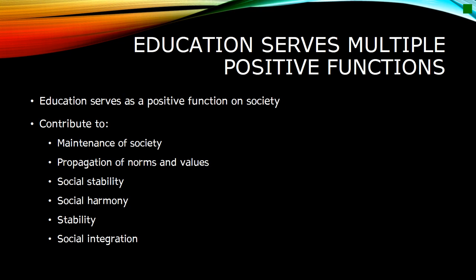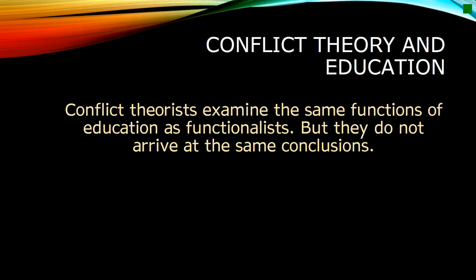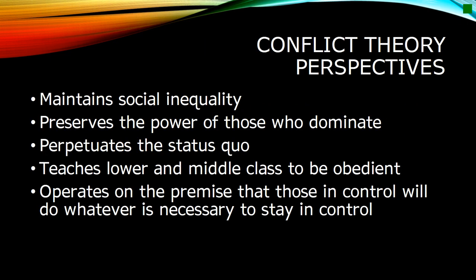Functionalism views society as being on a constant course towards social stability, and education is one of several social institutions that contribute to social harmony, stability, and social integration. Conflict theorists examine the same functions of education as functionalists, but they do not arrive at the same conclusions. Conflict theory sees education as maintaining social inequality and preserving the power of those who dominate society, while functionalists see education as a beneficial contribution to an ordered society.